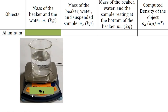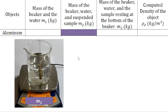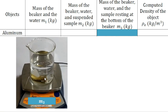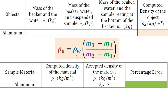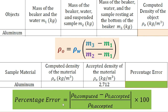To summarize the experiment: we get M1 — the mass of the beaker with water. Then we suspend the object (aluminum, copper, iron, or brass) to get M2. Then we let the object rest at the bottom of the beaker to get M3. We compute the mass density using the derived formula. To get the percentage error, the formula is: percentage error equals the absolute value of (computed density minus accepted density) divided by the accepted density, times 100.